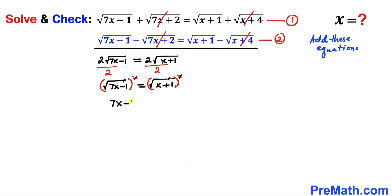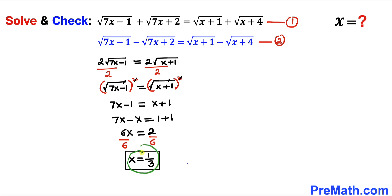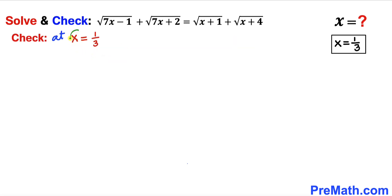Since both sides are square roots set equal, we can square both sides, giving 7x minus 1 equals x plus 1. Moving x to the left and the negative 1 to the right: 7x minus x equals 1 plus 1, so 6x equals 2. Dividing both sides by 6, our x value is 1/3.